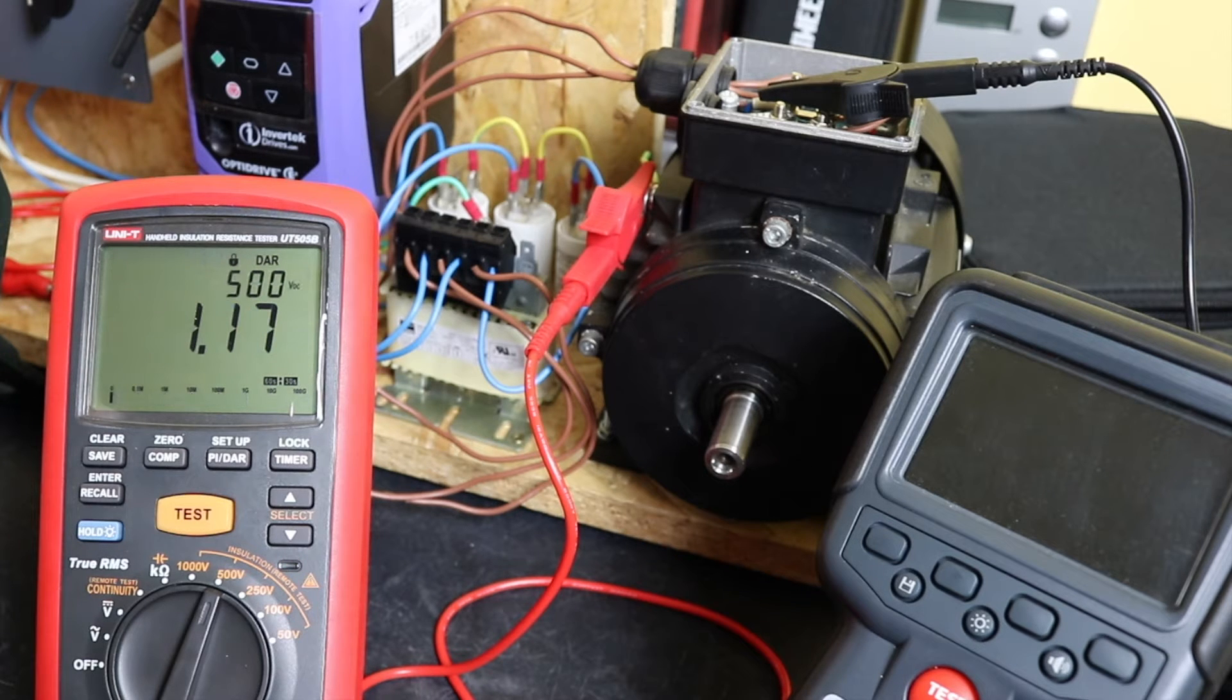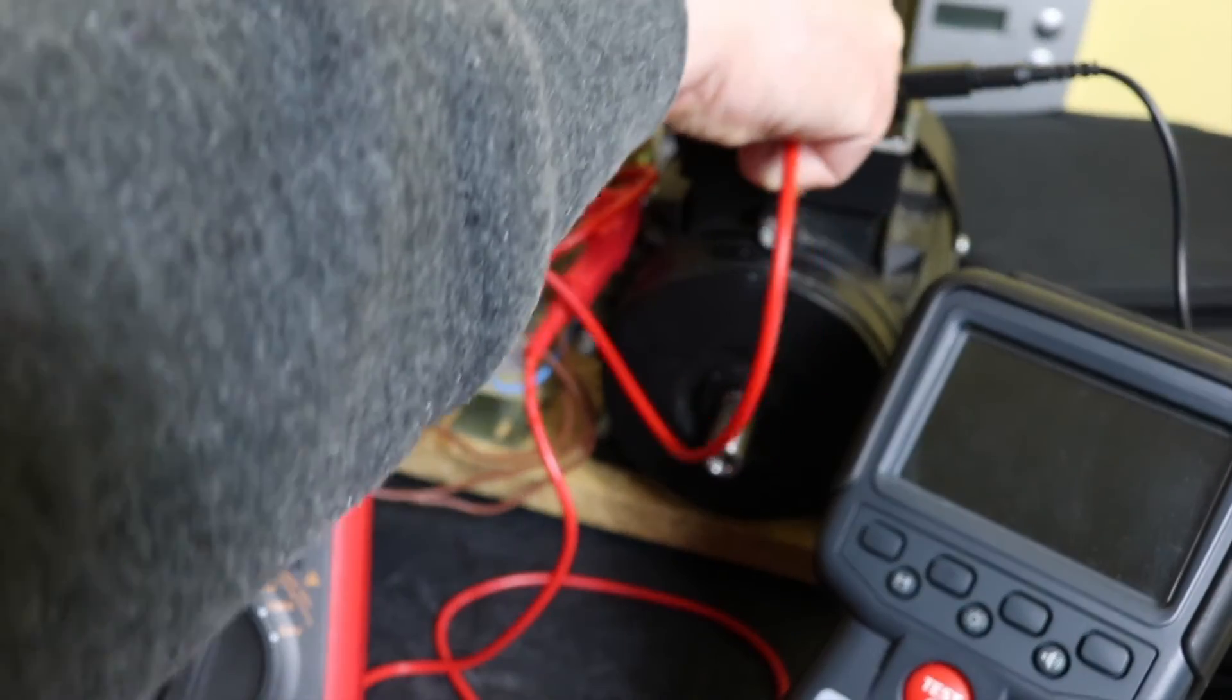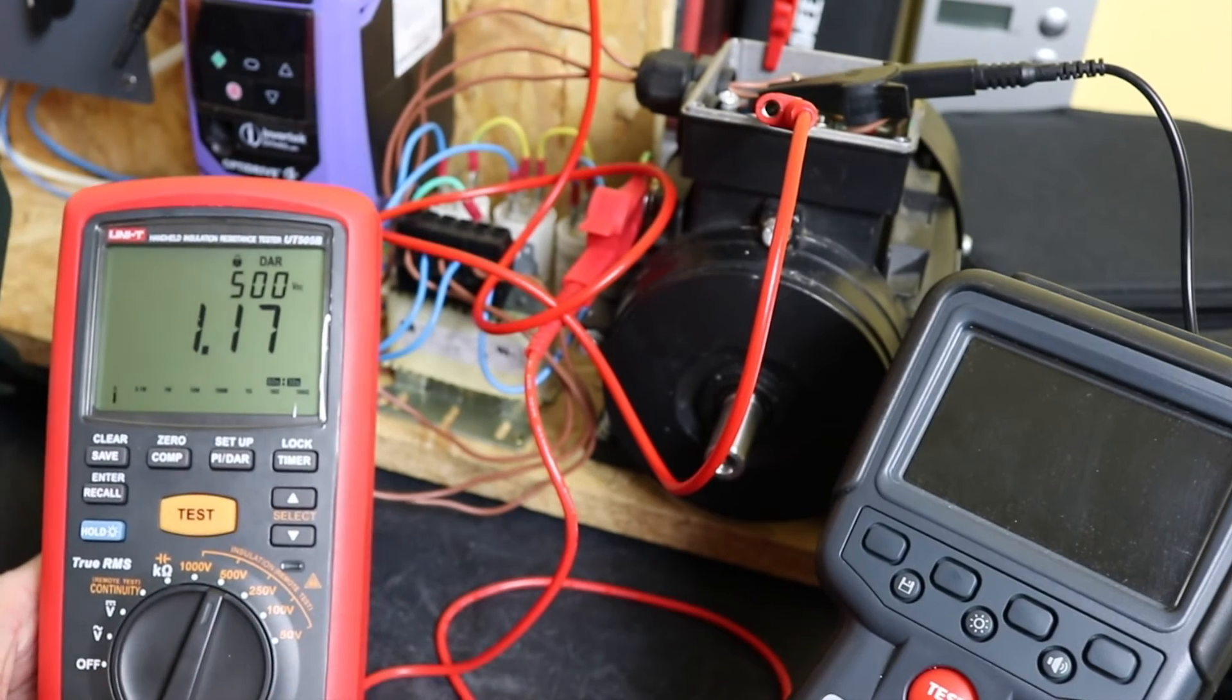So 1.77 gigaohms was the insulation value and a DAR of 1.17. Obviously it would be bad to keep doing insulation tests after insulation tests on this motor because you effectively charge it up, so I'm just going to short the motor out for a little while and then we'll do the test on the MTR105.